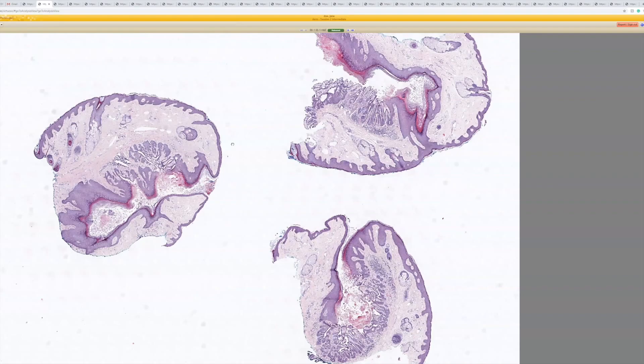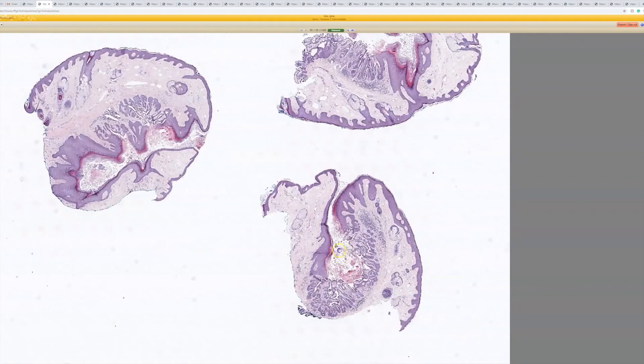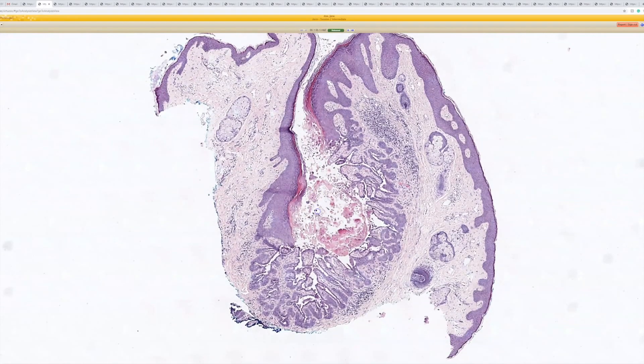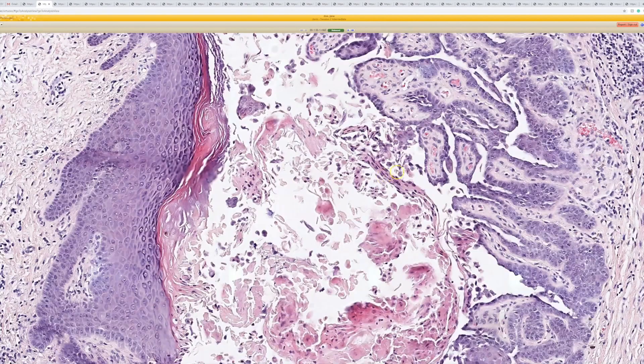Again, I can go ahead. So it looks like an endophytic kind of growth, where it's kind of invaginating. And it looks like there's maybe acantholysis. Good. And it kind of looks like an expanded hair follicle.